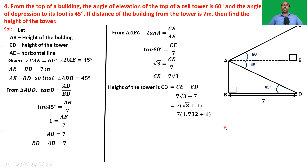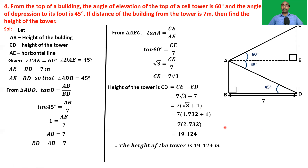Since √3 = 1.732, we get 7 × 2.732 = 19.124. Therefore the height of the tower is 19.124 meters.